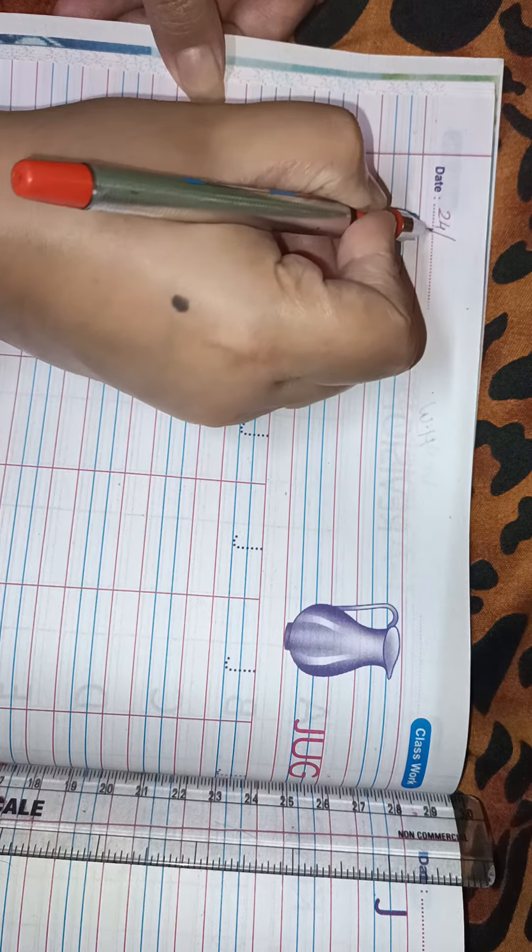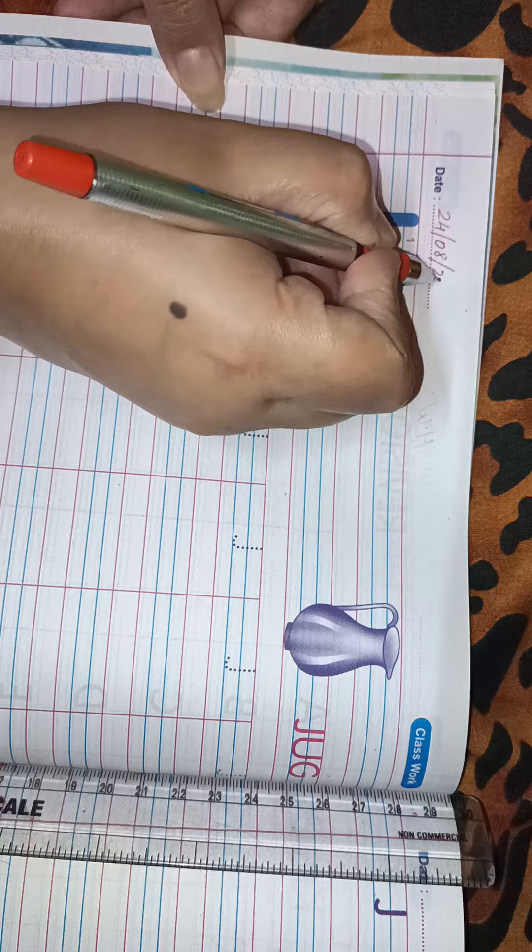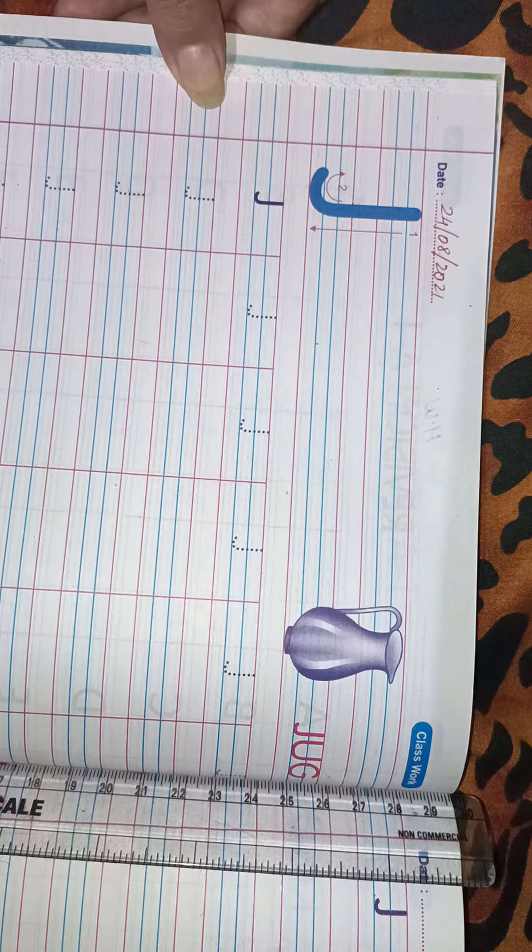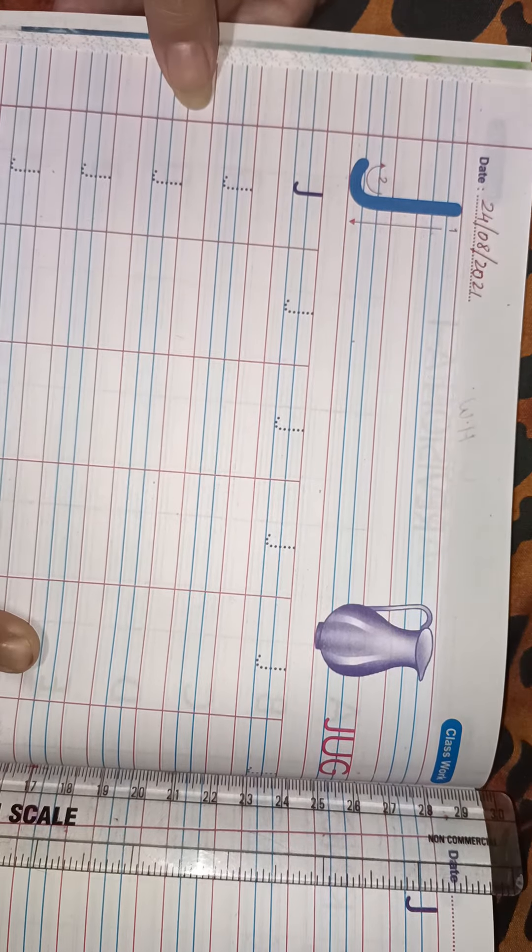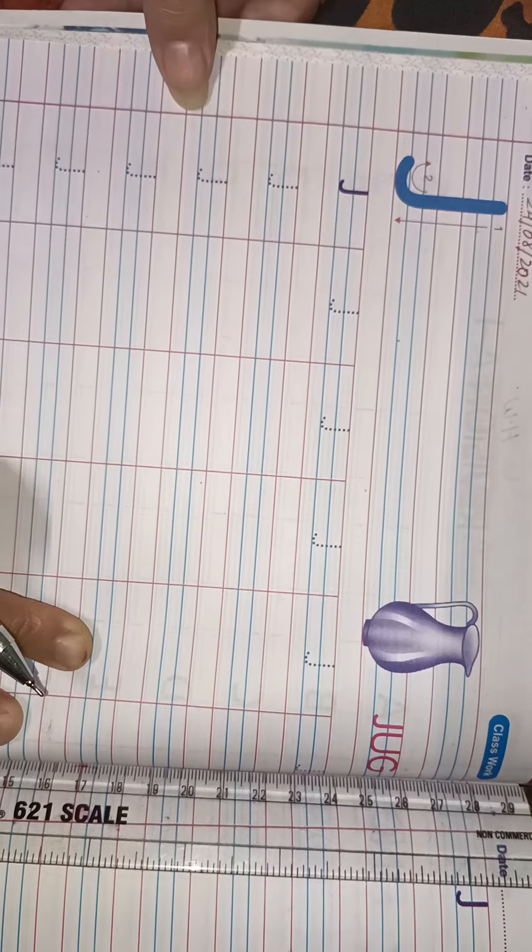karenge. That is 24-8-2021. Last class tak, pichli class tak hum log ne I tak likhna sikha tha. Aaj hum capital letter J likhna sikhaenge. J for